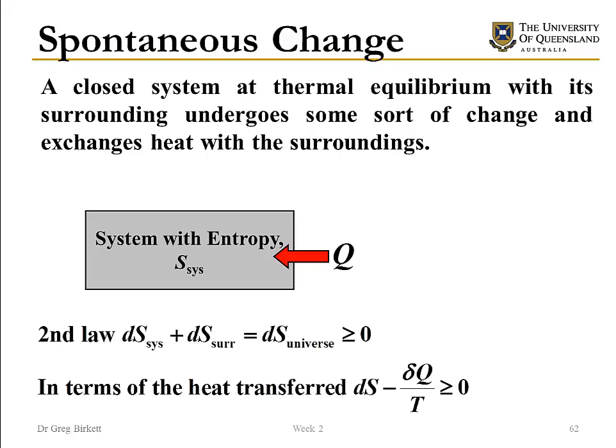To start with, we're going to look at a closed system that's at thermal equilibrium with its surroundings and undergoes some sort of change. As a result of that change, it exchanges heat with the surroundings. The second law says that the entropy of the universe has to increase, so the change in entropy of my system plus the change in entropy of my surroundings must be greater than zero. In terms of the heat transferred, the change in entropy of my system minus the incremental heat addition divided by T has to be greater than zero.